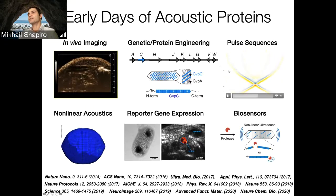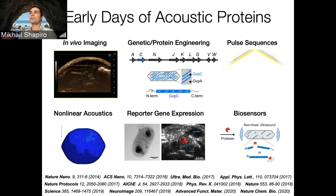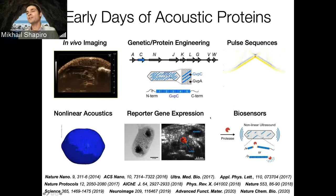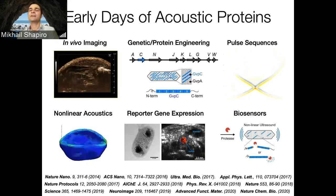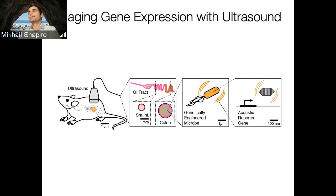The genetic engineering challenge is amplified by the fact that we're dealing not with one protein but with 8 to 14 proteins, depending on the species, that have to work together at the right stoichiometry to assemble these structures. That's challenging, but it also gives us more things to engineer. At the same time, we've had to optimize how ultrasound is transmitted and received — similar to how in optics, people developed confocal and multi-photon microscopy. We also want to apply this to imaging gene expression or sensing dynamic events like enzyme activity inside cells.